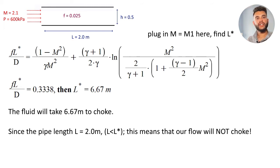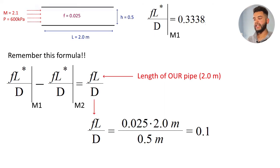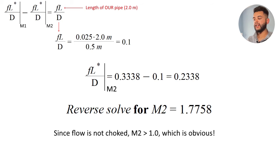We find L1 star to be 6.667 meters. Next we can use the Fano relation which is F times L1 star over D minus L2 star over D equals FL over D. L is the length we have of the pipe and we need to solve for L2 star because we need to find the Mach number downstream. It's basically solving it backwards. So solve for FL2 star over D and you get the value as shown and from that you can solve the Mach number.